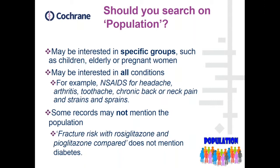For our population, you need to think about what your population is and if you're actually only interested in a specific group such as children, elderly, or pregnant women, in which case it may be perfectly feasible to restrict your search to that particular group. You also need to think about the condition, which is the other part of population — for example, diabetes or epilepsy, more like the disease or condition. With adverse effects it's very interesting to think about this.